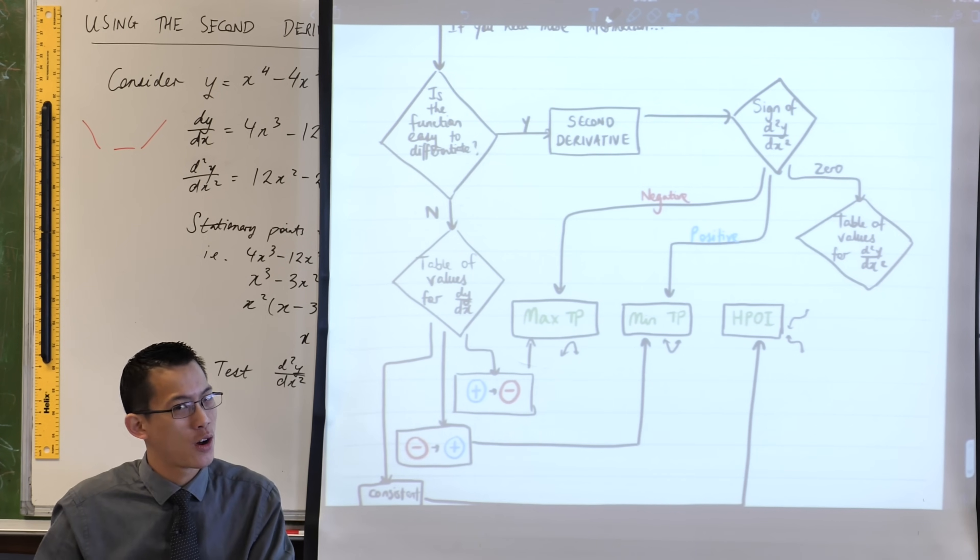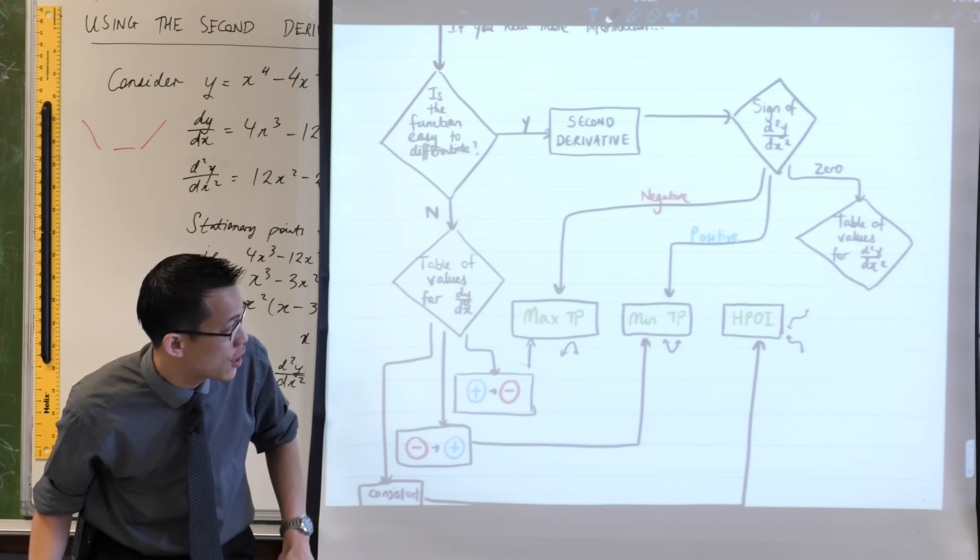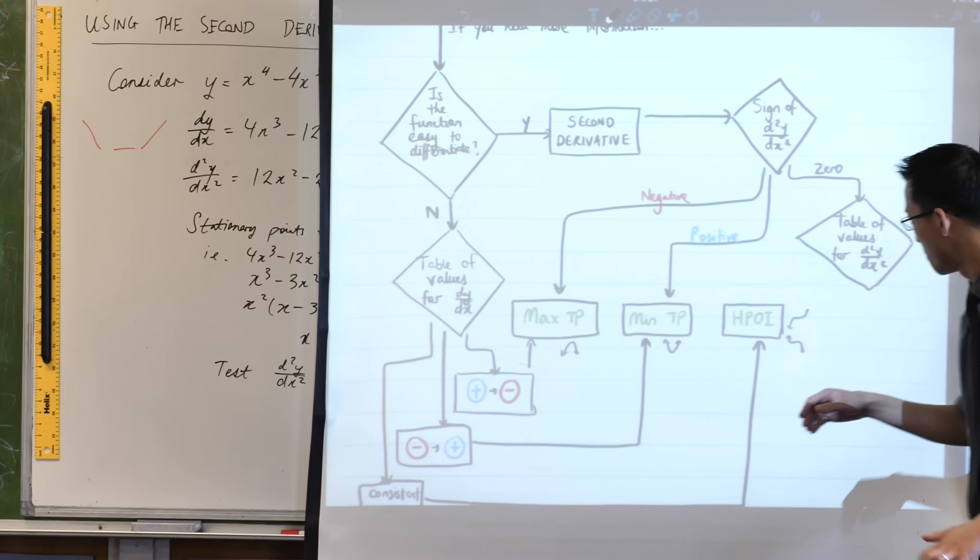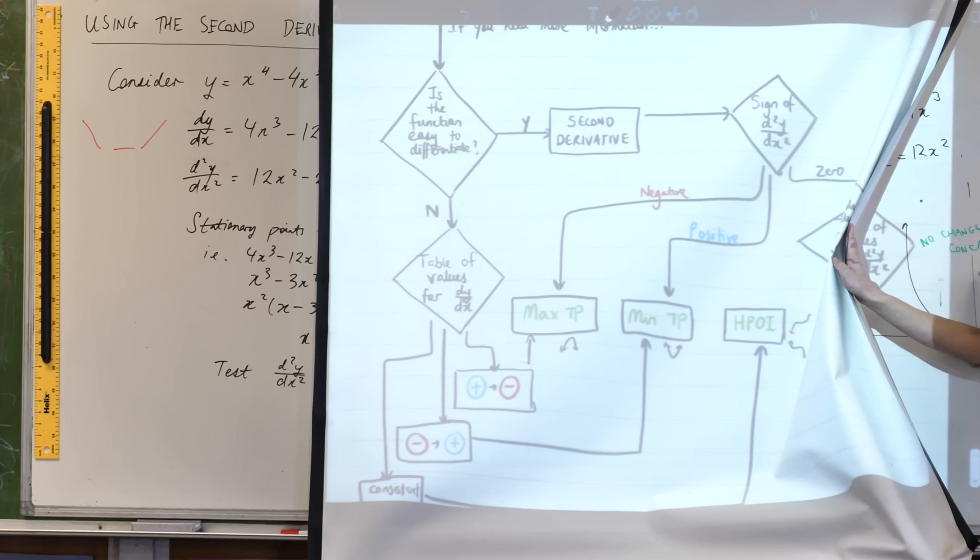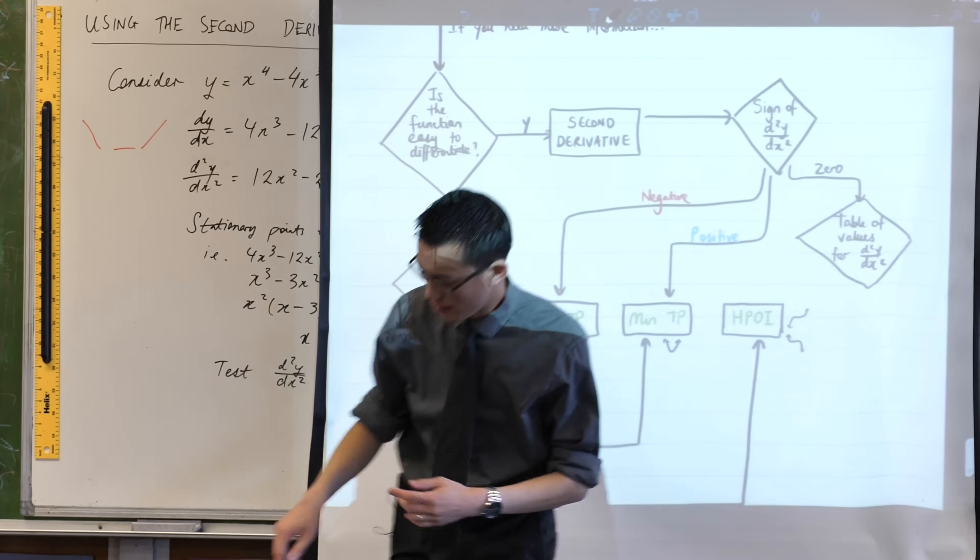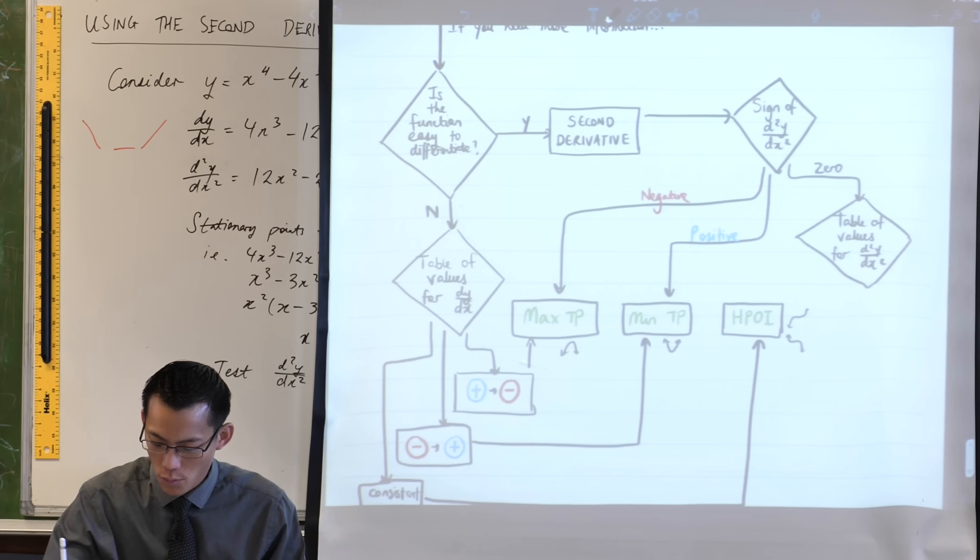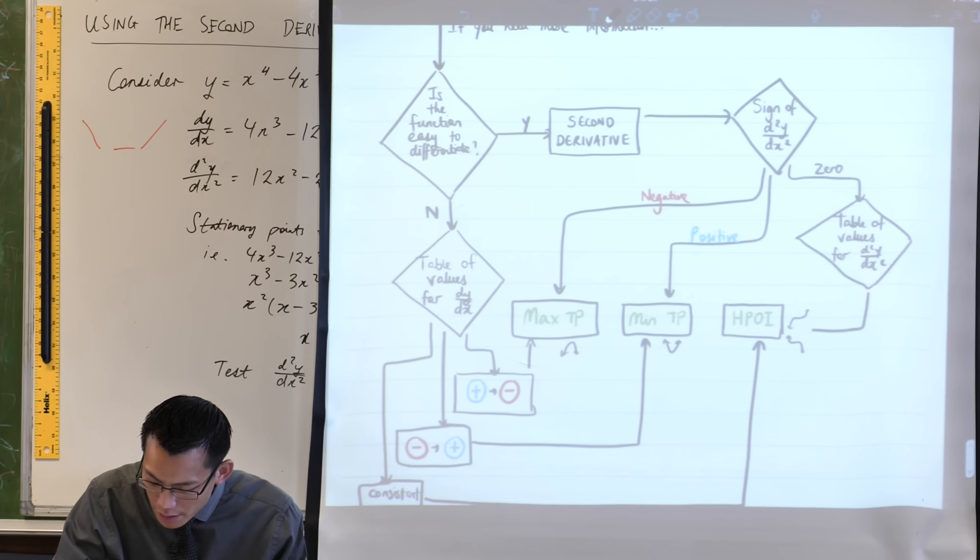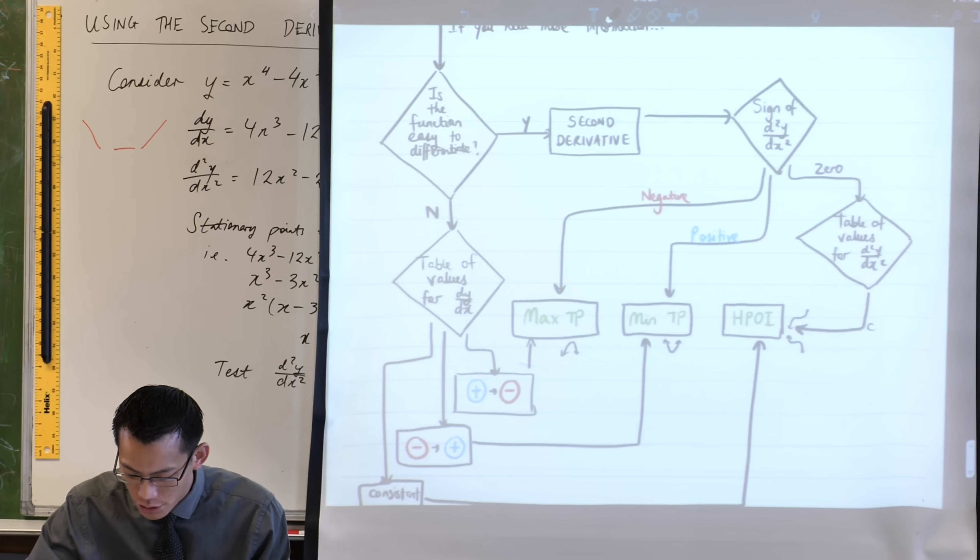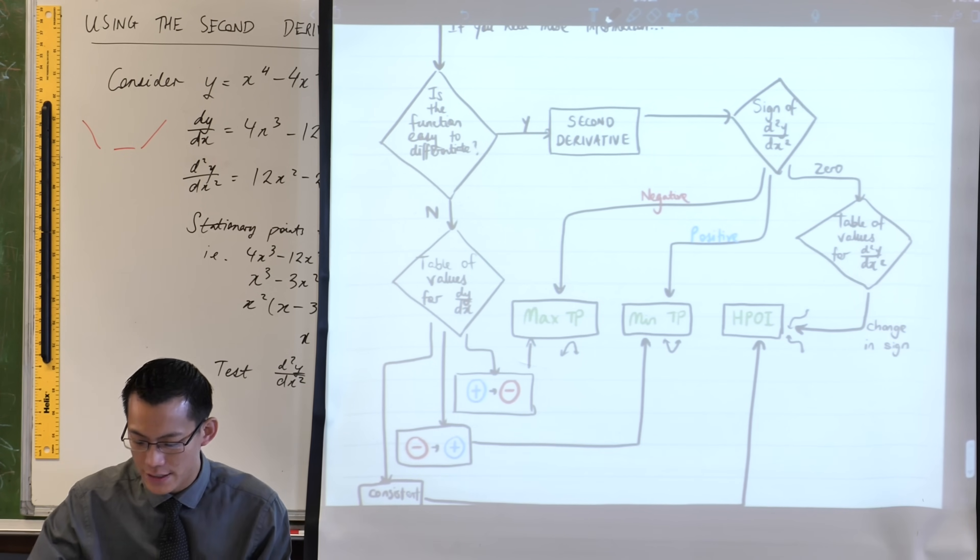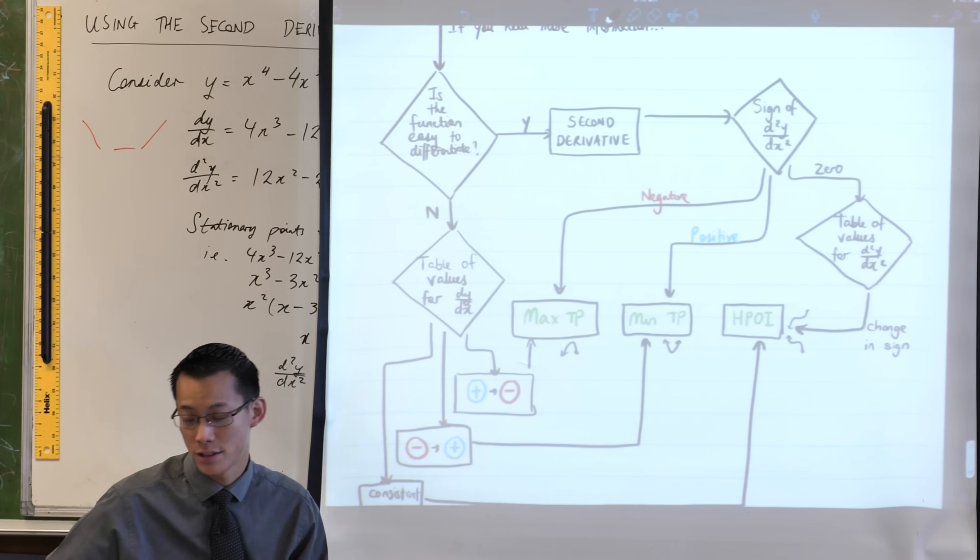If it's a horizontal point of inflection, then the definition of a point of inflection full stop is that there's a change in concavity. Do you remember that? So there is a change in sign like this. What might happen is there's a change in sign. If you went from concave up to concave down, great, horizontal point of inflection, or vice versa. So that's nice.